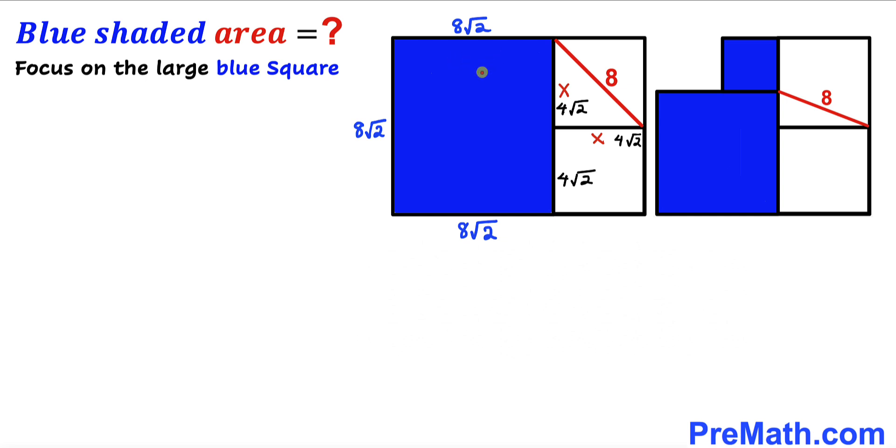Now let's focus on this big blue square. We're going to calculate its area. Recall the area of a square formula: Area = s², where s represents the side length of the square.